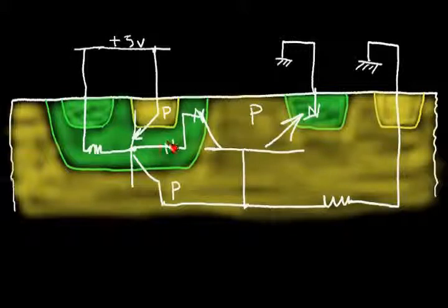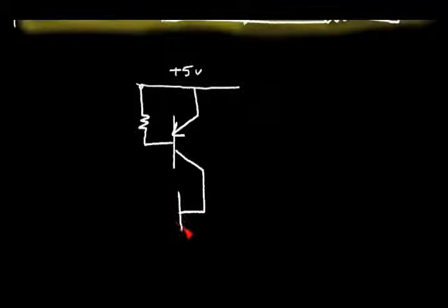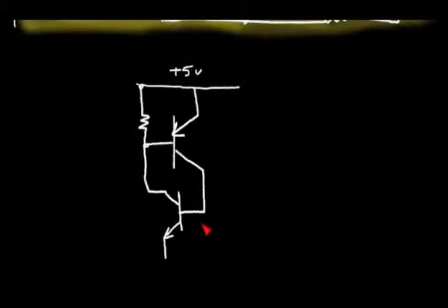So if we redraw this schematic: over here I have my plus 5 volts, and I have my P-N-P transistor with a certain resistance to the supply. This collector feeds into the base of the N-P-N transistor, and the collector of the N-P-N feeds back to the base of the P-N-P. This emitter can be grounded, and I can have a resistor here also to ground. So this is my ground.